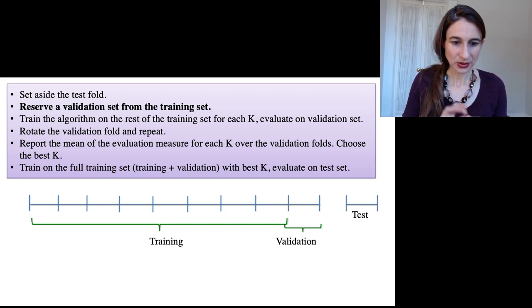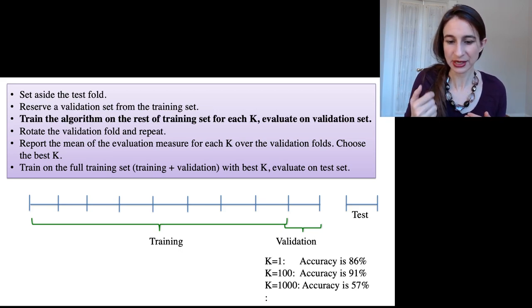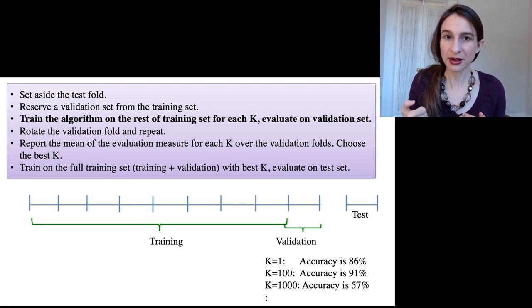I reserve my validation fold, and then I train the algorithm on the rest of the training set for each value of K, and then I evaluate that on the validation set. So I'm getting these accuracy values on that validation set.